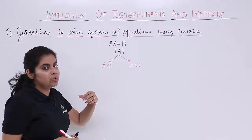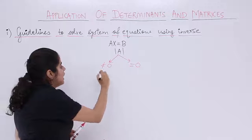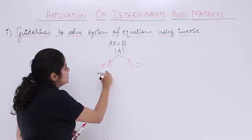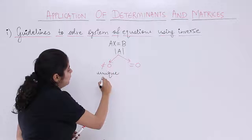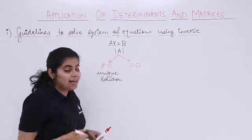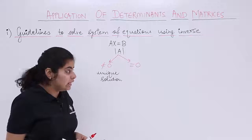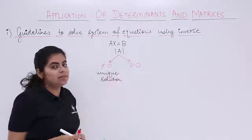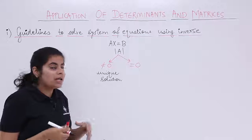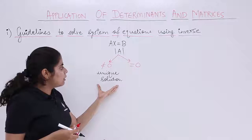If the determinant value is by chance not 0, then we say that there exists a unique solution. That means only one unique solution will exist to the given system of equations. While if we have determinant value equal to 0, again something else would follow that we will see. But coming back to this,